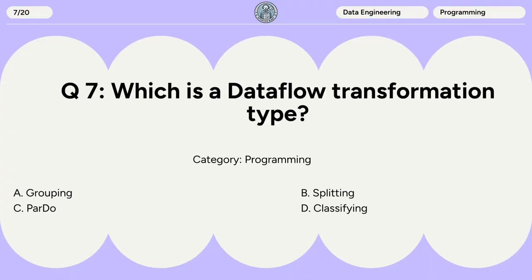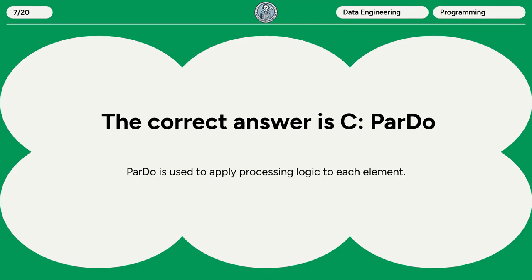Question 7: Which is a Dataflow transformation type? A. Grouping. B. Splitting. C. ParDo. D. Classifying. The correct answer is C. ParDo. ParDo is used to apply processing logic to each element.